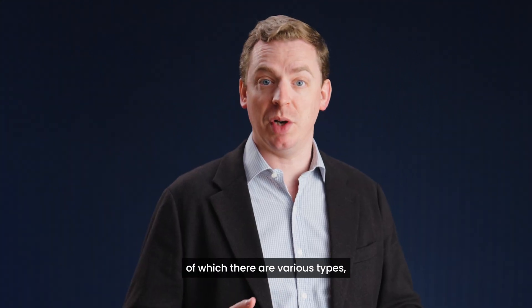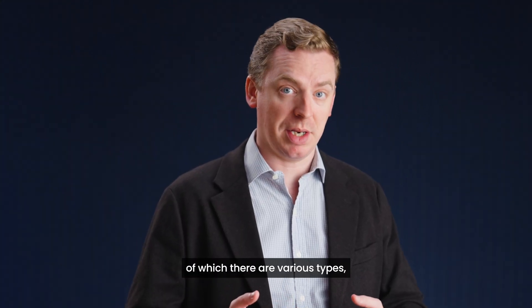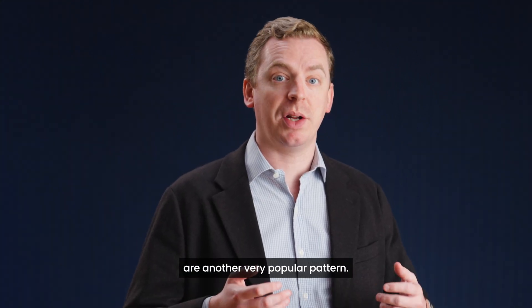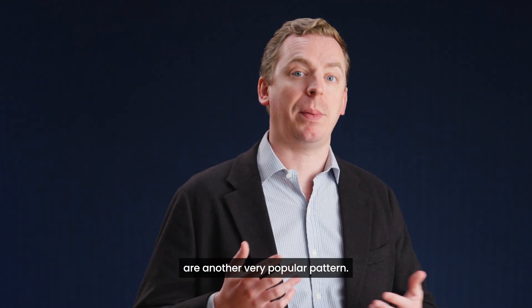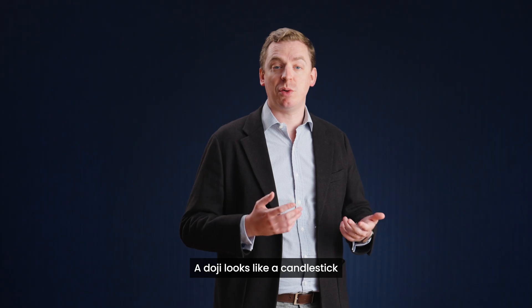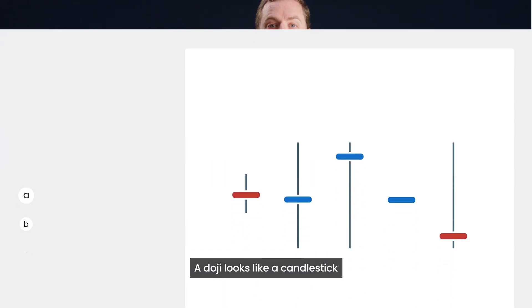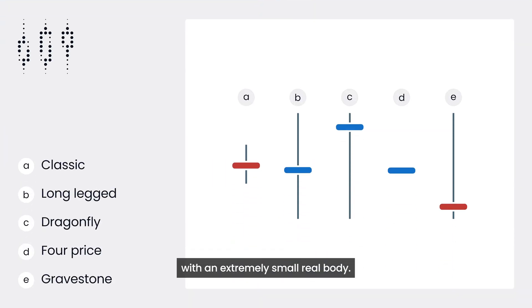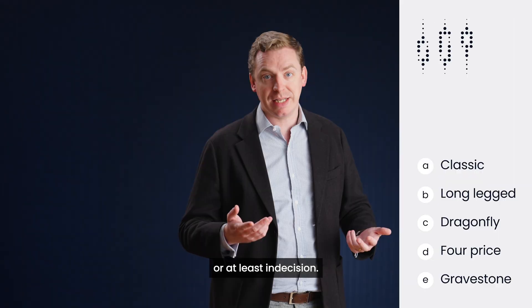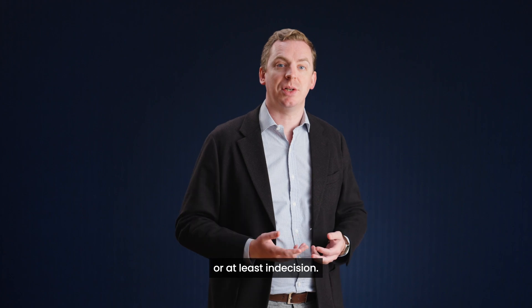Dojis, of which there are various types, are another very popular pattern. A doji looks like a candlestick with an extremely small real body. It usually indicates reversal, depending on the context, or at least indecision.